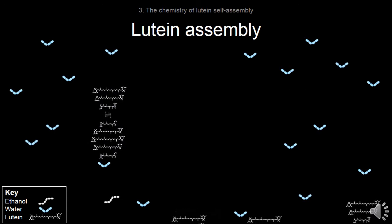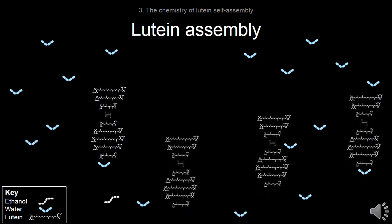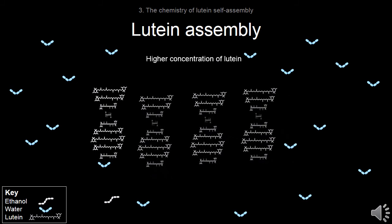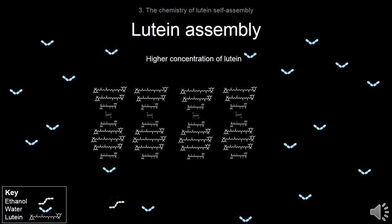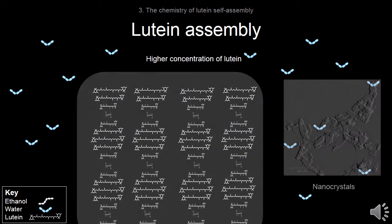At higher concentrations of lutein, the helical assemblies start to associate, forming an ordered crystalline structure.